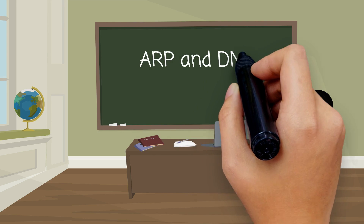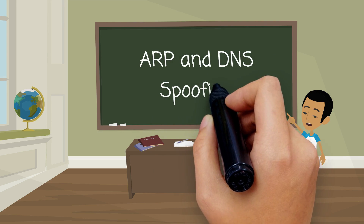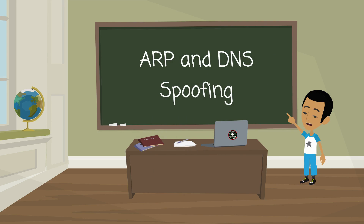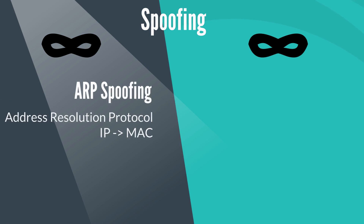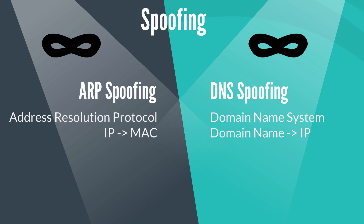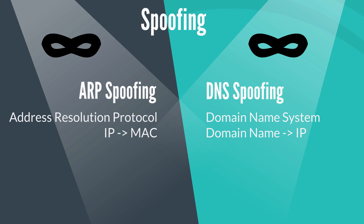In this video you will learn about ARP and DNS spoofing. There are two main types of spoofing attacks: ARP and DNS. ARP stands for address resolution protocol and it maps the IP address to the MAC address. DNS stands for domain name system and it maps the domain name to the IP address.